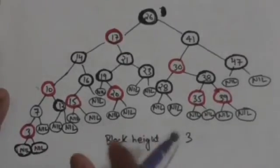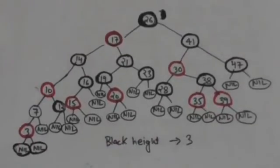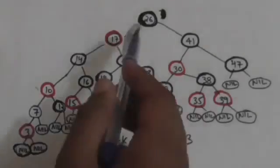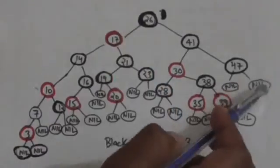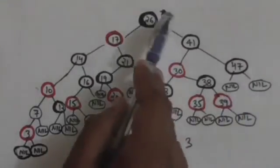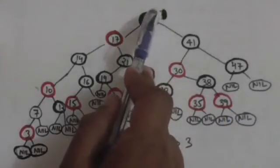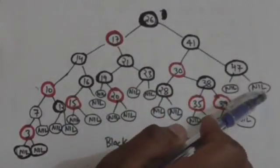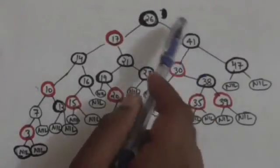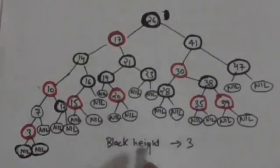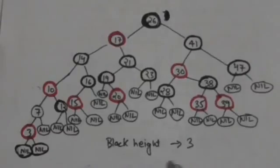Now we have to find the black height of this red-black tree. The black height of a red-black tree is the black height of its root, so we choose any path from the root to a descendant leaf. We count the number of black nodes in this path but do not count the root node itself. In this path there are three black nodes — one, two, and three. So the black height of the root node is 3, and therefore the black height of this red-black tree is 3.